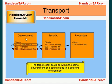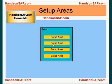Or the target client could reside in a different environment. For example, here the configuration is being moved to the training environment, where the training client is residing in a different box.